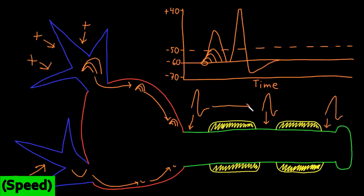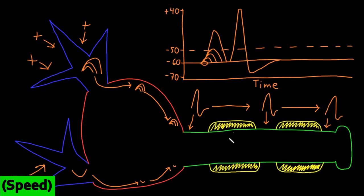The speed that action potentials are conducted down axons is often very fast — anywhere from 1 meter per second up to 100 meters per second. Larger diameter axons conduct action potentials faster than smaller diameter axons, and myelinated axons — axons that have a myelin sheath — conduct action potentials faster than axons that don't. These two factors often go hand in hand, as we usually see myelin sheaths on larger diameter axons.